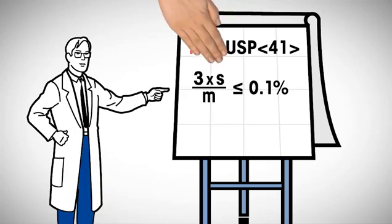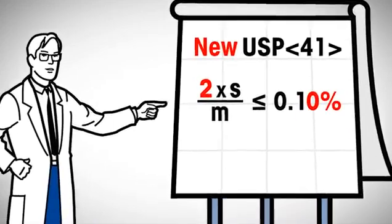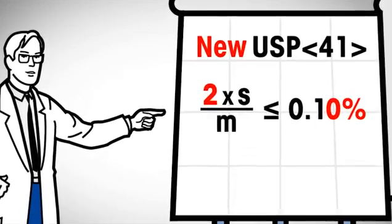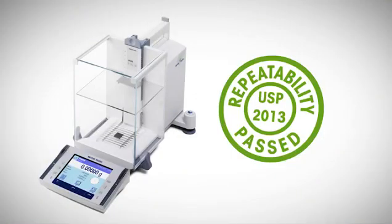In the new USP 41, first, the expansion factor goes down from 3 to 2. Second, the weighing tolerance changes from 0.1% to 0.10%, meaning a deliberalization of rounding. These two changes reflect current metrology practices and virtually compensate each other, so in most cases the minimum weight will remain unchanged.